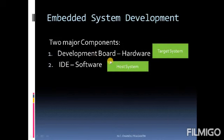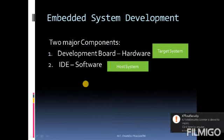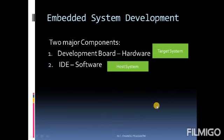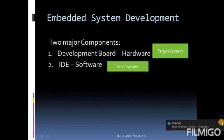For embedded system development, we require two components: hardware and software. Hardware includes the development board, and software includes the IDE — the integrated development environment. This development board is called the target system, and the IDE software is called the host system.